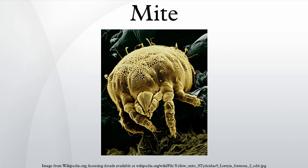Many mites which have been well studied are parasitic on plants and animals. One family of mites, Pyroglyphidae, or nest mites, live primarily in the nests of birds and animals. These mites are largely parasitic and consume blood, skin, and keratin. Dust mites, which feed mostly on dead skin and hair shed from humans instead of consuming them from the organism directly, evolved from these parasitic ancestors.